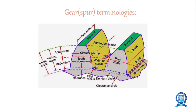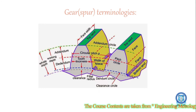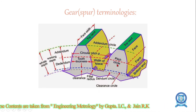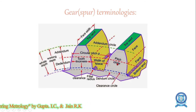Pitch circle diameter is the diameter of a circle which will produce the same motion as the toothed gear. Pitch circle is the imaginary circle of a gear that rolls without slipping over the circle of its mating gear.